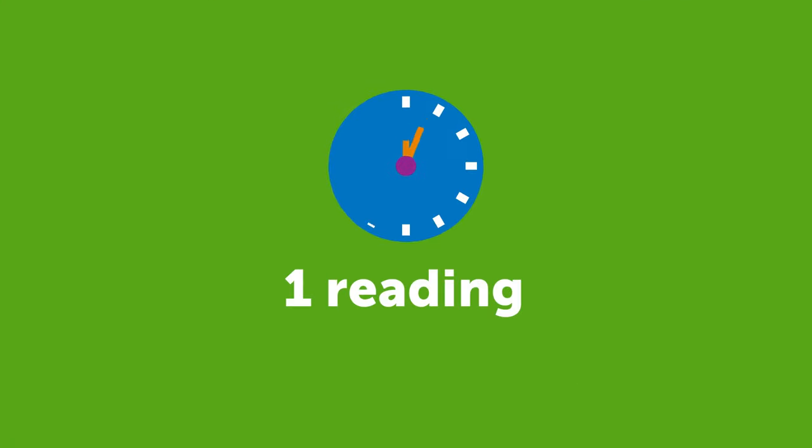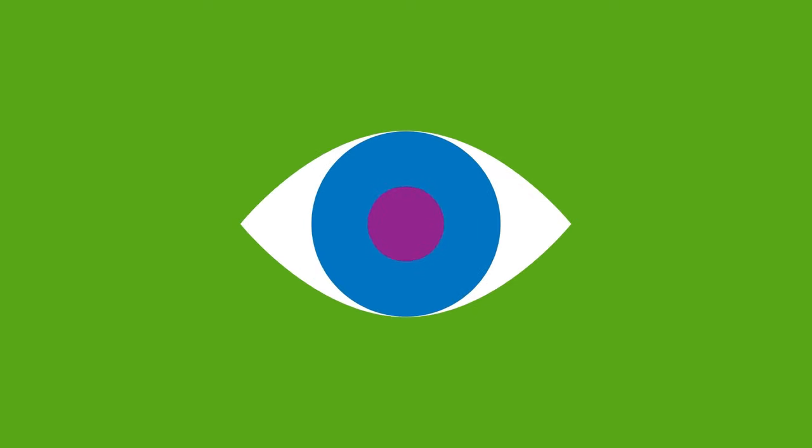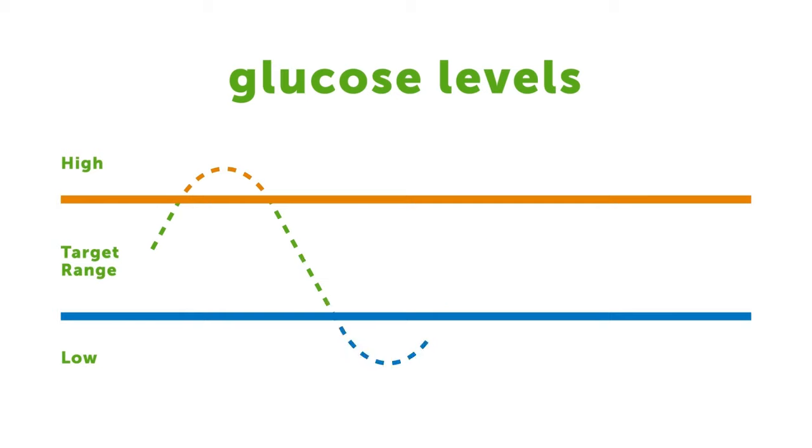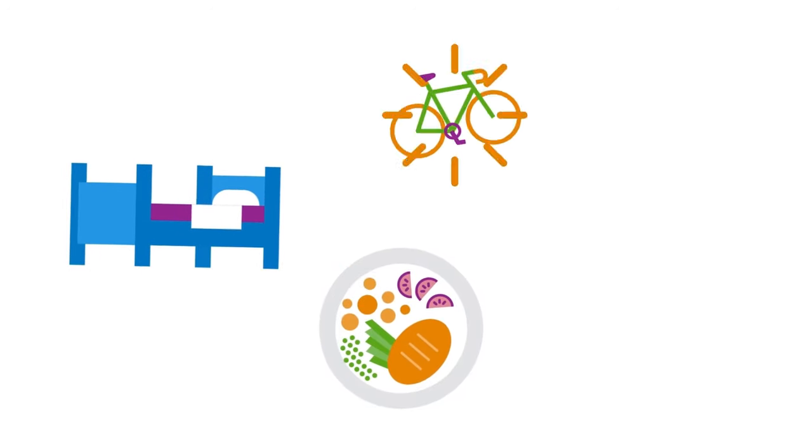The Dexcom G6 and G7 RTCGM system can provide up to 288 real-time readings in a 24-hour period, giving valuable insight into glucose levels, whether they are high or low, stable, rising or falling,